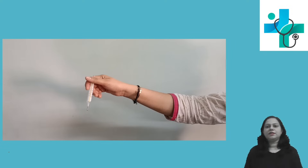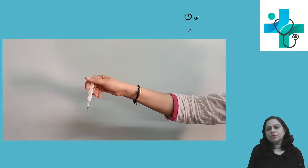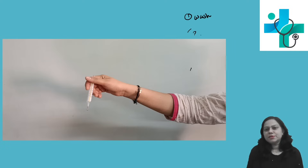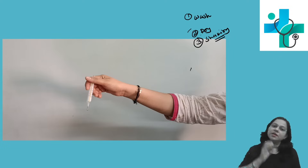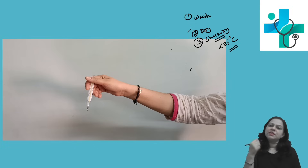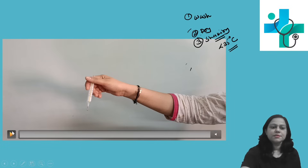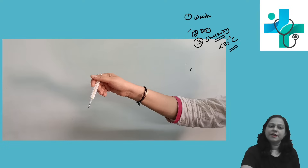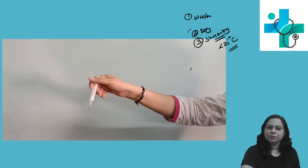Let us understand how to use the clinical thermometer. The steps are: first, wash the bulb of the clinical thermometer in clean water or in antiseptic solution. Second, dry it. Third, by shaking movements of the hand, bring the mercury level down in the thermometer below 35 degree Celsius. You are supposed to move the hand like this — shaking movement — to bring the mercury down below 35 degree Celsius.